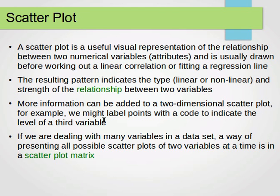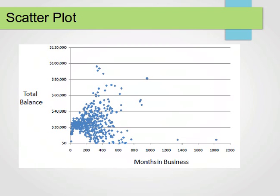We can add more information to two-dimensional scatter plots — for example, giving points labels with a code or color to indicate the level of a third variable. If we have several numerical variables, we can compare them two at a time by building what is known as a scatter plot matrix, where we have a matrix of all variables and plot each pair against each other, as we'll see in the next slides.